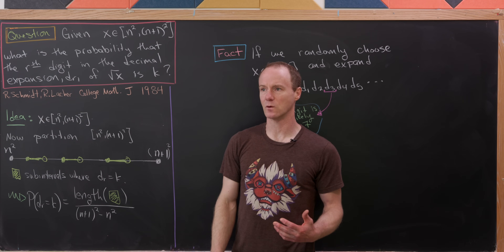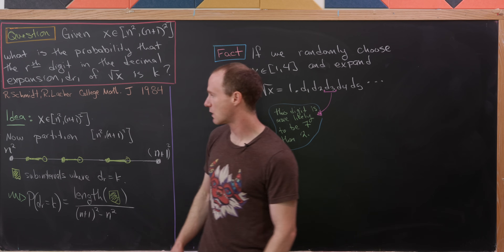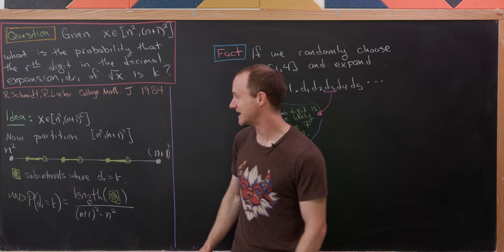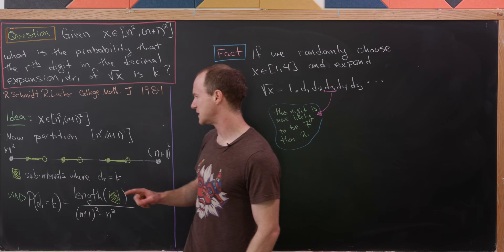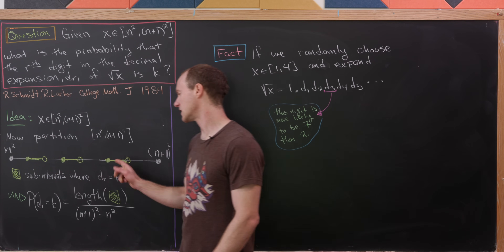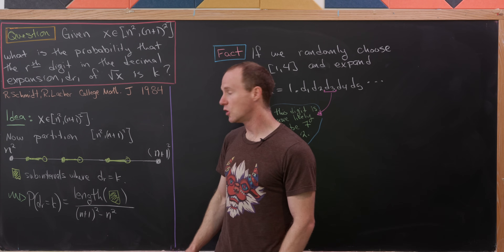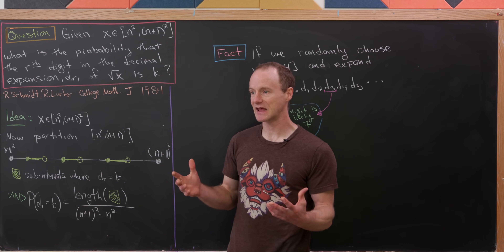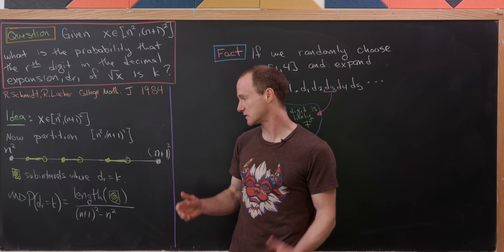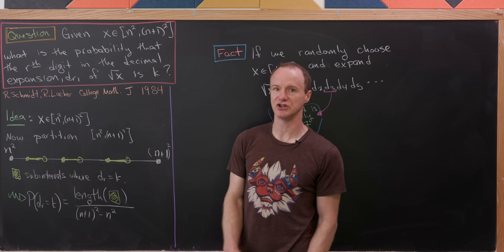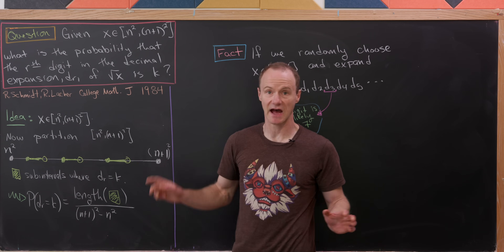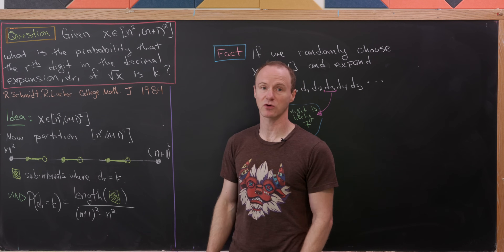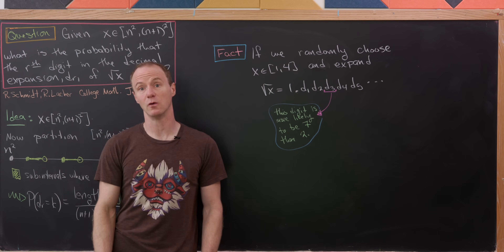Let's look at the idea for our proof. We're going to take an x between those consecutive perfect squares, n² and (n+1)², and partition this interval into pieces. I've labeled those pieces as the whole interval in white chalk, and yellow sub-intervals in yellow chalk. The yellow sub-intervals are the places where that r-th digit is k. The probability that the r-th digit equals k is the total length of those sub-intervals over the length of the entire interval.